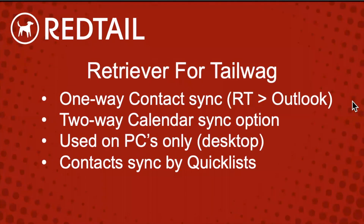The next sync is Retriever for Tailwag — a desktop program Redtail created that syncs with the desktop version of Outlook. If you have Outlook downloaded to your computer, you can also download Retriever for Tailwag. This is a one-way contact sync that goes from Redtail to Outlook only — contacts added in Outlook will not be brought over to Redtail. It also offers a two-way calendar sync, though you can configure it as one-way (Redtail to Outlook only). This is for PCs only; Mac users won't have the option to use Retriever for Tailwag.